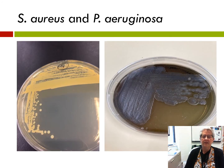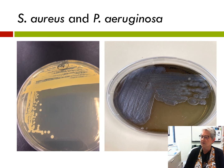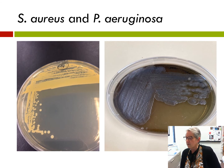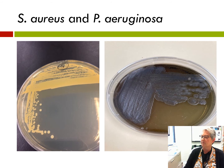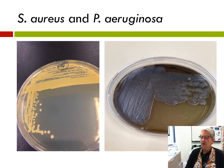These two bacteria have very different colony characteristics. Staphylococcus aureus, or S. aureus, is on the left — it's the yellow-gold bacteria. Pseudomonas aeruginosa is on the right; that's the blue-green bacteria. The Pseudomonas aeruginosa appears more flat, although some colonies may have that umbonate appearance, whereas Staphylococcus aureus has a nice circular, entire colony formation.